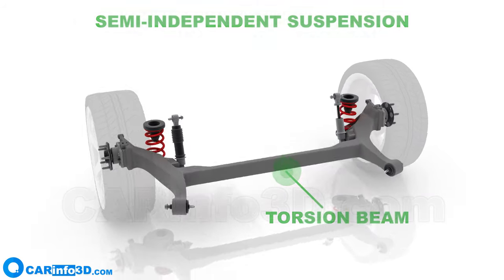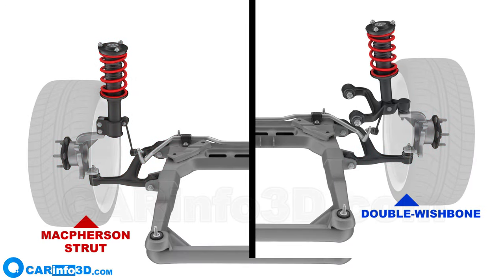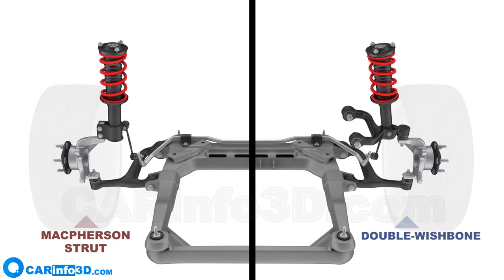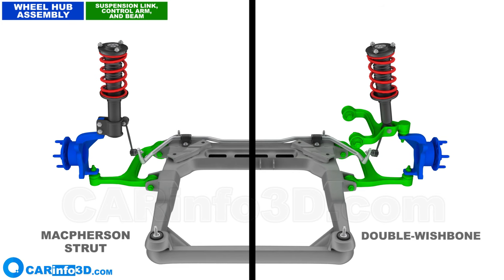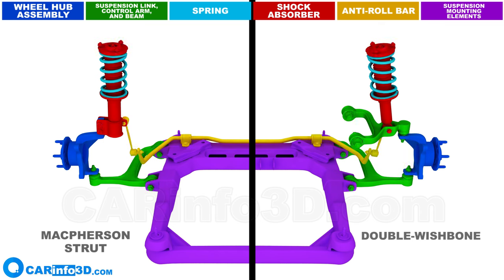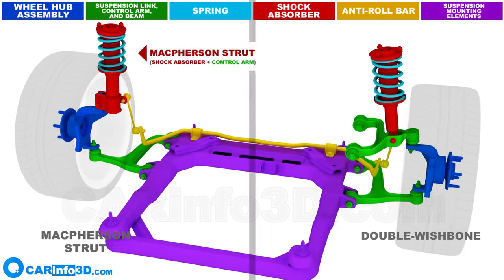Let's examine the structure of the front independent suspension using the example of the McPherson strut and the double wishbone suspension. These suspension systems include a wheel hub — in this instance, the hub is mounted on a steering knuckle — suspension links, control arms and beams, springs, shock absorbers, an anti-roll bar, and suspension mounting elements. Note that one part can have more than one function; for example, the strut in the McPherson suspension system may serve as a shock absorber and a control arm.